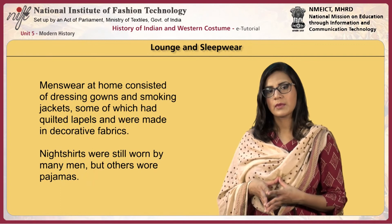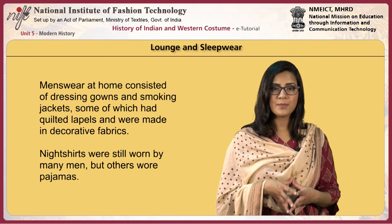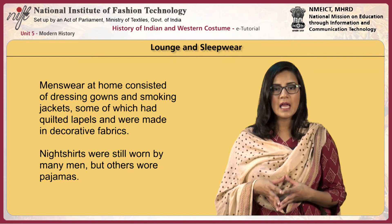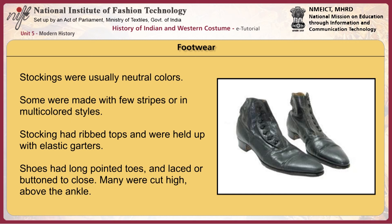Menswear at home consisted of dressing gowns and smoking jackets, some of which had quilted lapels and were made in decorative fabrics. Night shirts were still worn by many men, but others wore pyjamas. Hair was kept short and faces were kept clean-shaven. Hairstyles remained much the same as those in the latter part of the 19th century, including top hats for formal occasions, soft felt hats with names such as Homburg or Trilby, Derbys, and caps for leisure. Western-style Stetson felt hats were worn in some parts of the USA. For summer, Panama hats, straw boaters, and linen hats made in derby or fedora-like shapes were worn. For footwear, stockings were usually neutral colours, some with few stripes or multi-coloured styles, with ribbed tops held up with elastic garters.